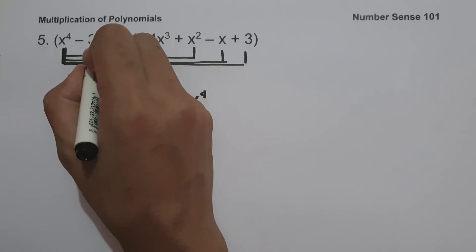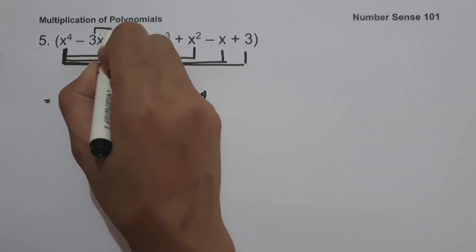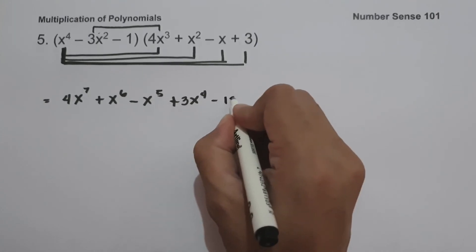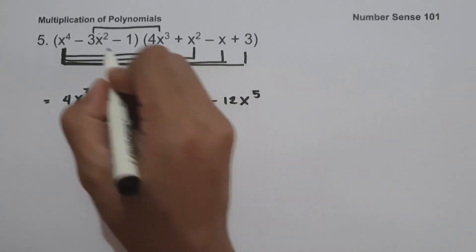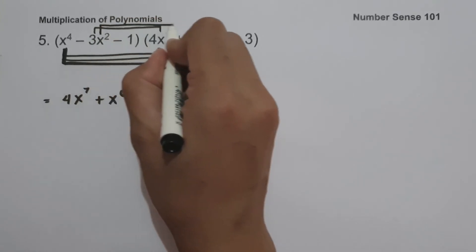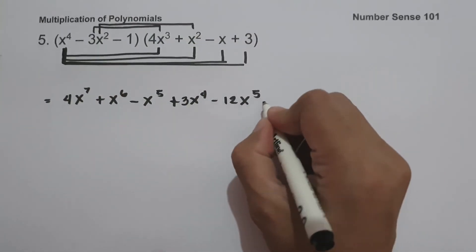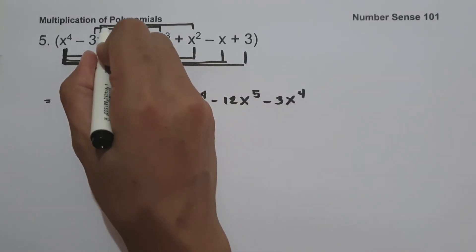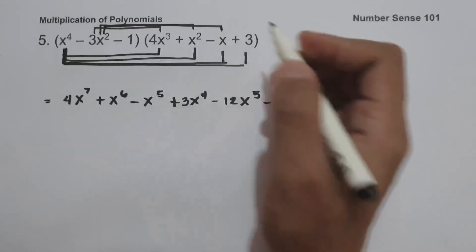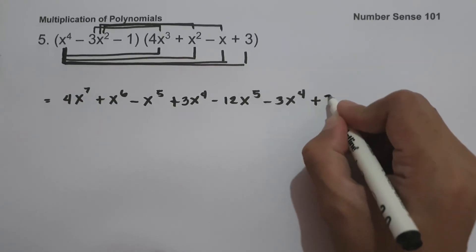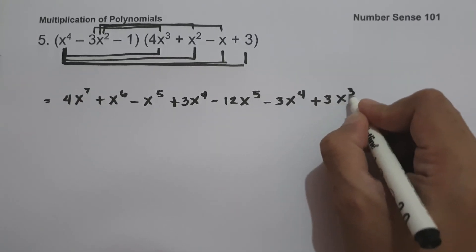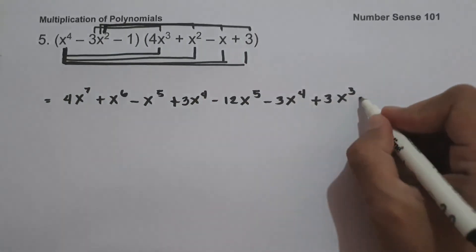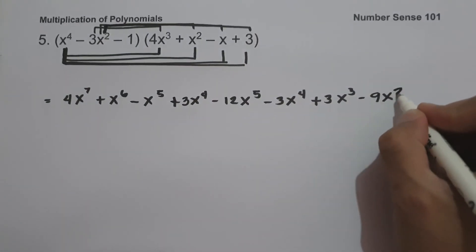Then negative 3x squared multiplied by 4x cubed is negative 12x raised to 5. Negative 3x squared multiplied by x squared is negative 3x raised to 4. Negative 3x squared multiplied by negative x is positive 3x cubed. Negative 3x squared multiplied by 3 is negative 9x squared.